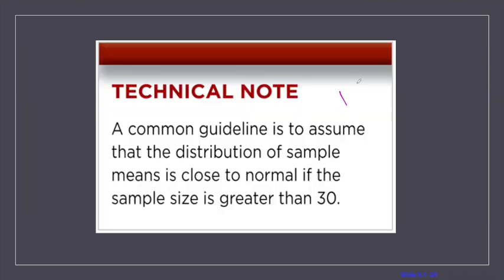Technical note: we're going to assume the distribution of sample means is close to normal if the sample size is greater than 30. You always want a sample size greater than 30. We saw with the kids aged 4, 5, and 9 that taking samples of size 1, then 2, then 10 didn't give us a perfect approximation of a normal distribution. We want a normal distribution because there's so much information we can learn and interpret from the normal curve.